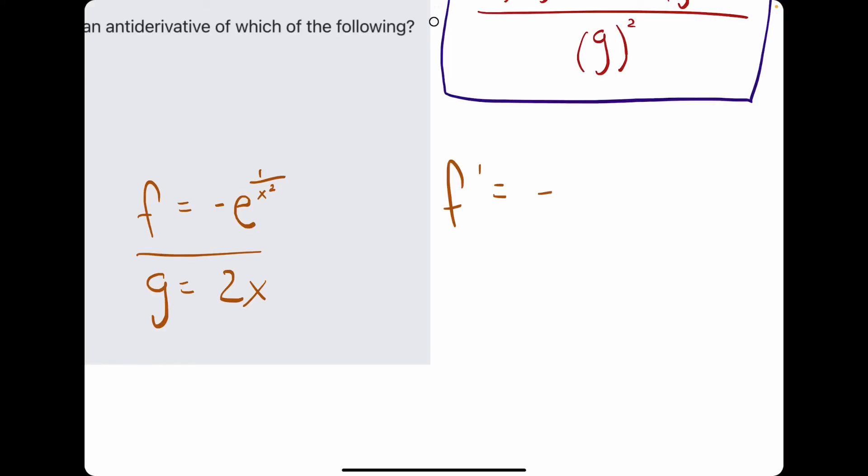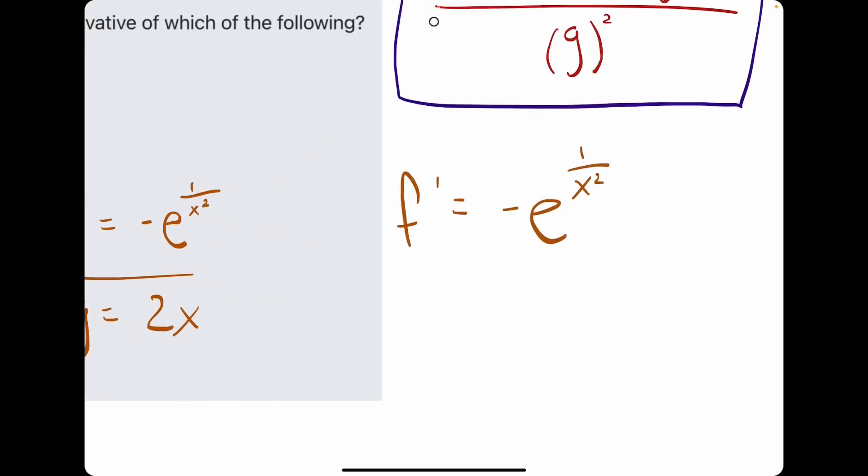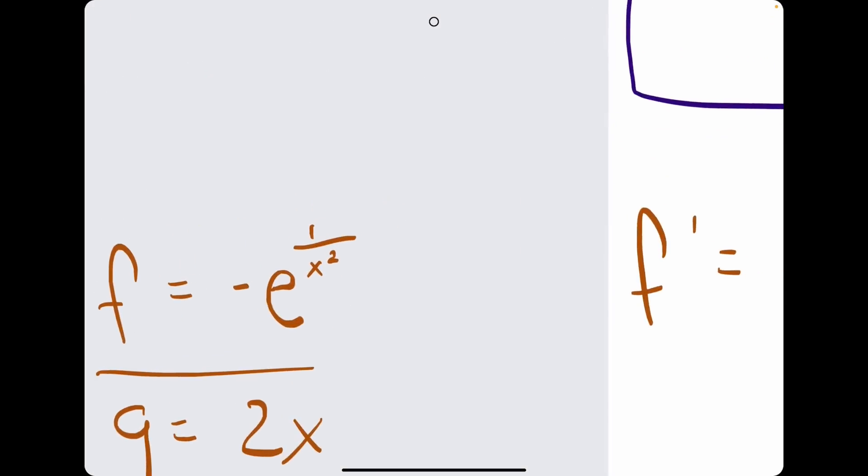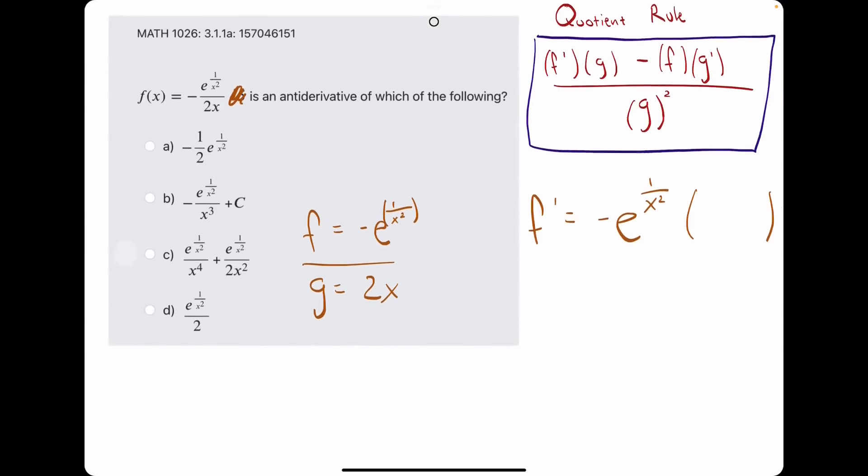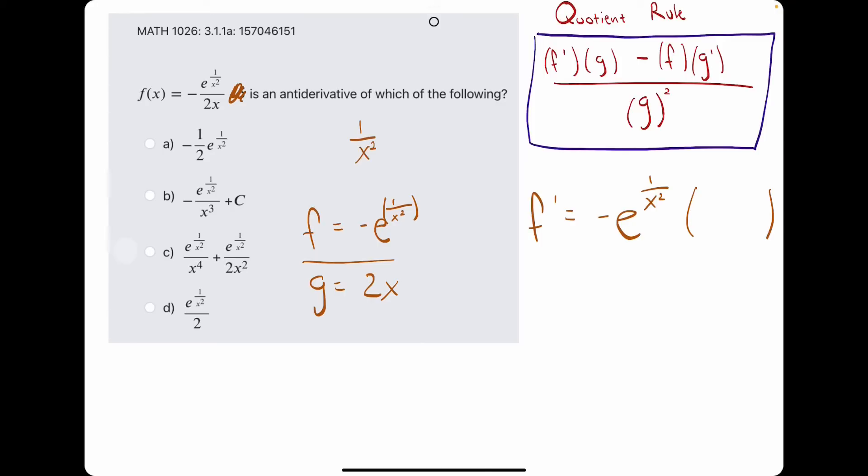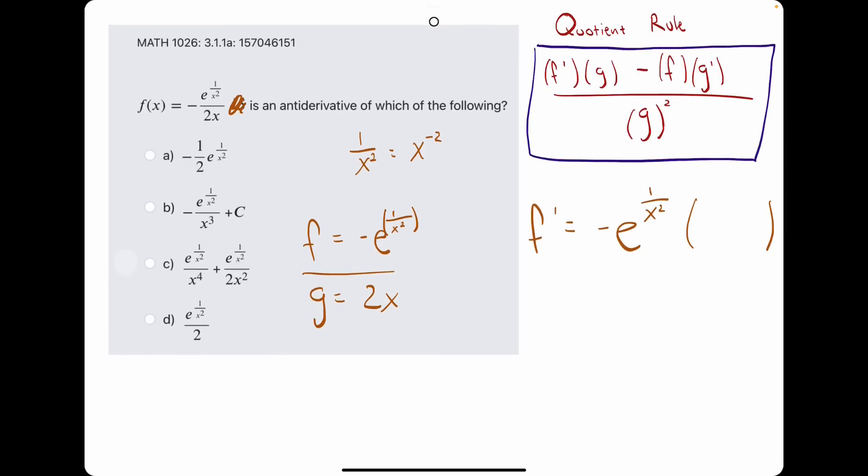Actually, we want f prime, which would be the derivative of f here. So, again, any e term is kind of just repeated for its derivative. e to the something has a derivative of e to the something. And that negative is out in front, so that just stays out in front as well. So, then we need the derivative of the inside piece, which is 1 over x squared. 1 over x squared can be rewritten as x to the negative 2.